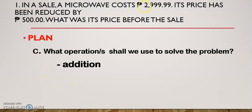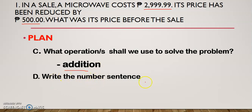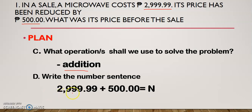Once you already know the important details, you know the facts, and you know the operations that you're going to use, it would be easy for you now to write the number sentence. The number sentence is very important so that you would know how to compute or solve the problem. The number sentence in this problem is 2,999.99 plus 500 equals N, wherein N represents the missing number.